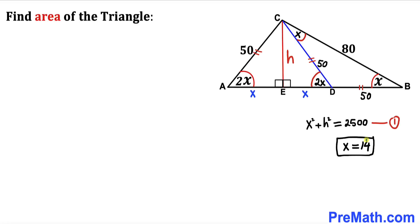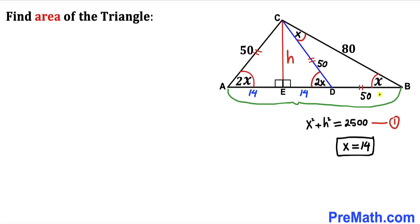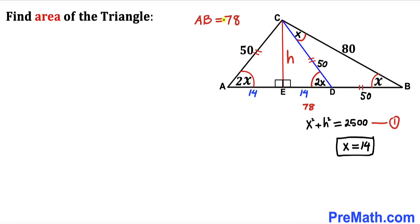Since x equals 14, we replace both x values with 14. The total length AB is the sum of 14, 14, and 50, which gives us 78 units. So side length AB turns out to be 78 units.